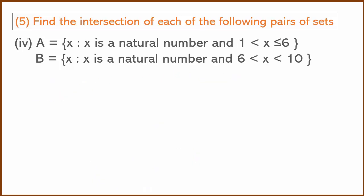The fourth sub-question: A is the set of natural numbers where 1 < x ≤ 6, so A = {2, 3, 4, 5, 6}. B is the set of natural numbers where 6 < x < 10, so B = {7, 8, 9}.